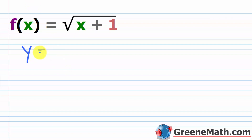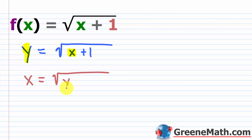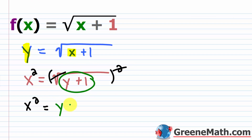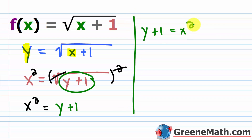So let's say this is y equals the square root of x plus one. Let's swap x and y, so we get x equals the square root of y plus one. To get rid of the radical, I'll square both sides, giving x squared equals y plus one. Flipping this around, y plus one equals x squared, and then subtracting one from each side, we get y equals x squared minus one.